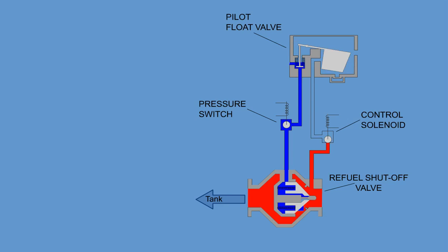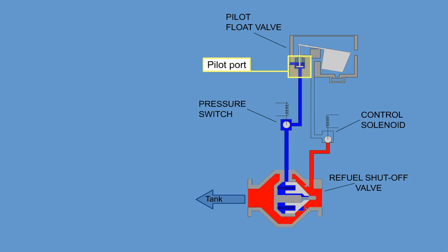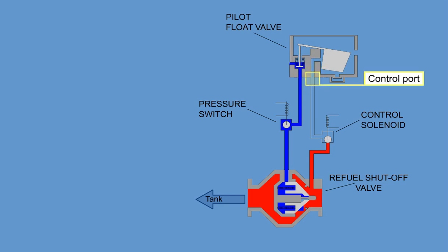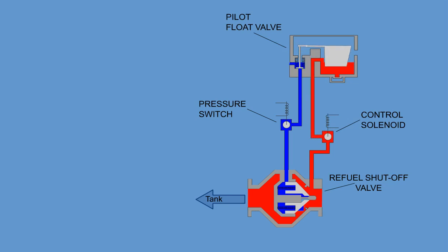The pilot valve consists of a float, pilot port, and control port. The float can be lifted by fuel level rise or by the application of pressure to the control port. When the float is up, the pilot port is closed, which allows pressure build-up in the pilot line connected to the refuel shut-off valve.